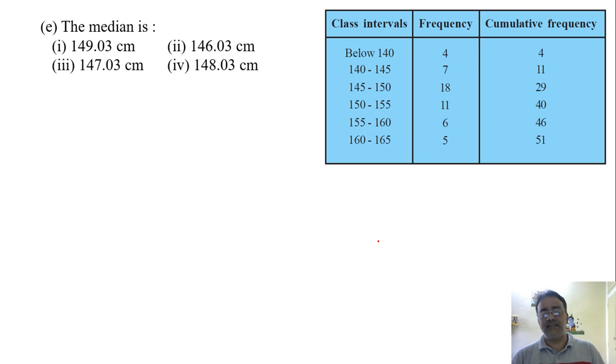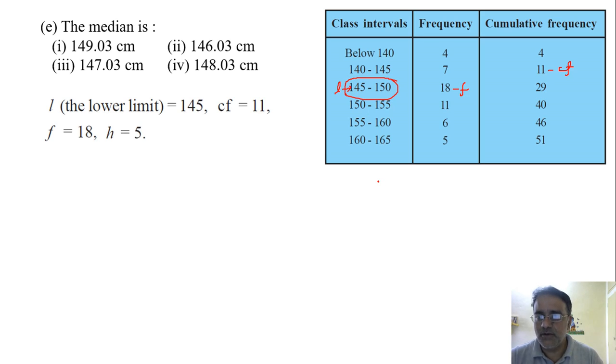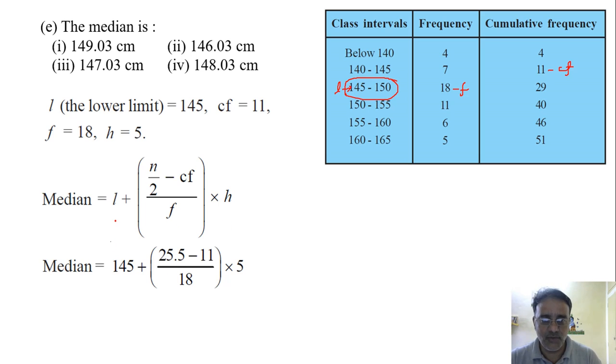We got the median class as 145 to 150. So this is the frequency and the cumulative frequency of the preceding class is 11. So this is our cf and this is our L, 145. Now we will write the formula: L plus n by 2 minus cf upon f into h. Then we will substitute all the values: 145 plus 25.5 minus 11 by 18, into 5.